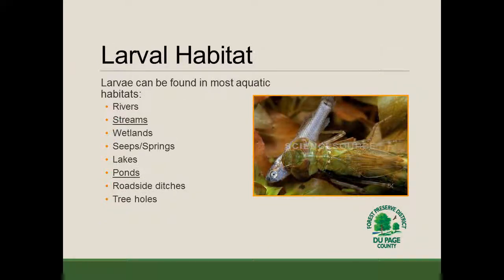The larvae are exclusively aquatic and will always be found in water, and that includes many different habitats. We have found dragonfly and damselfly larvae in rivers, streams, wetlands, seeps and springs, lakes, ponds, even roadside ditches and tree holes. In our area, the most common habitats we find them in are going to be streams and ponds — that's usually where we find both the greatest abundance as well as the greatest diversity.